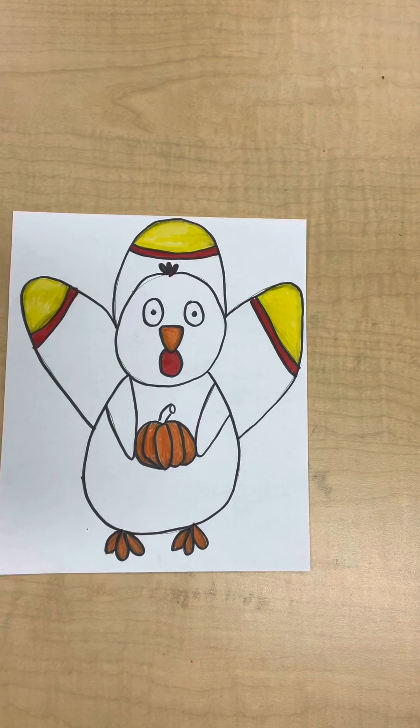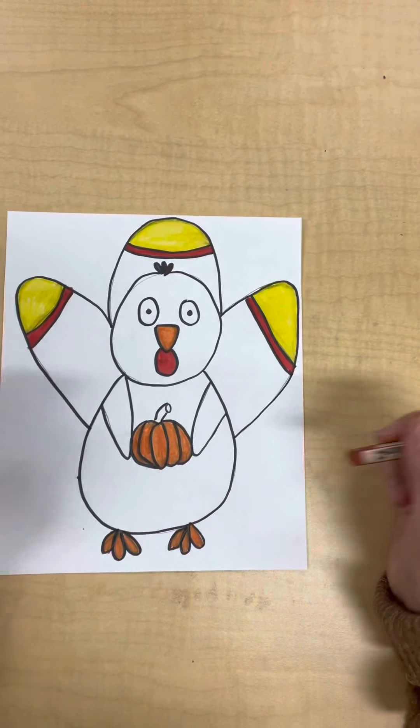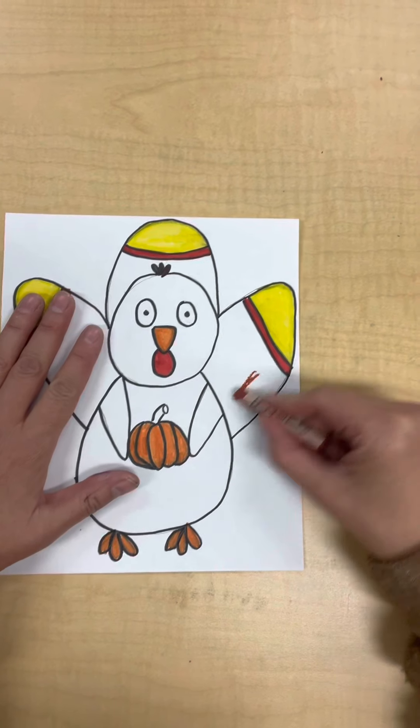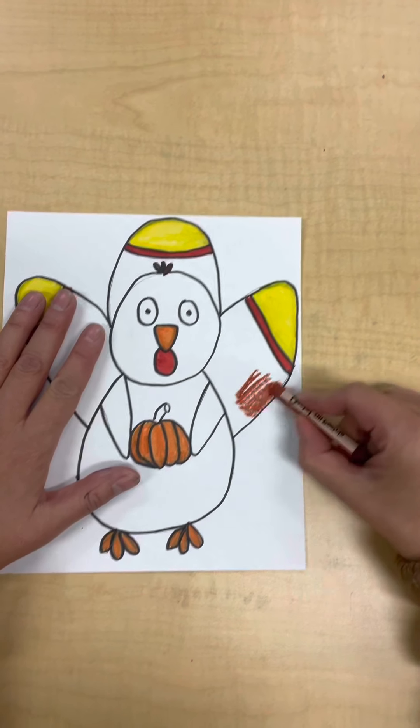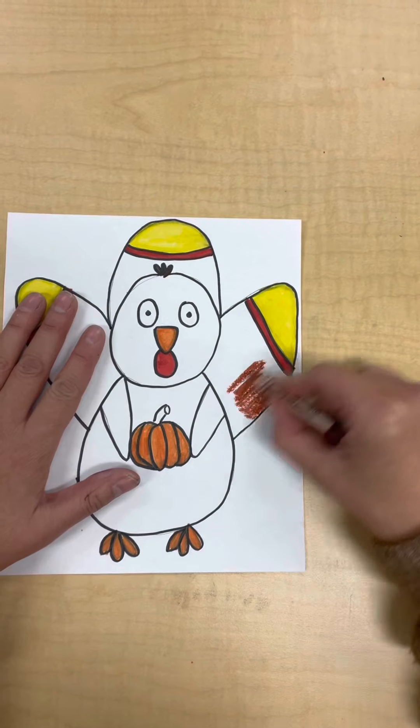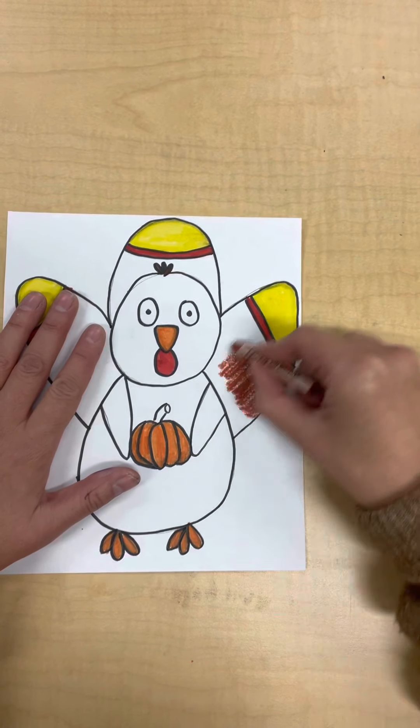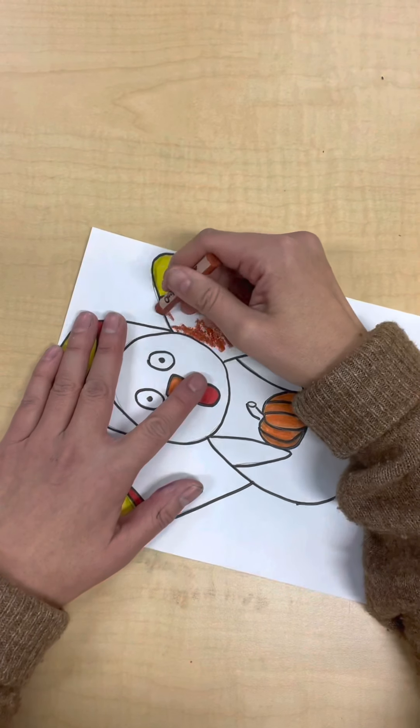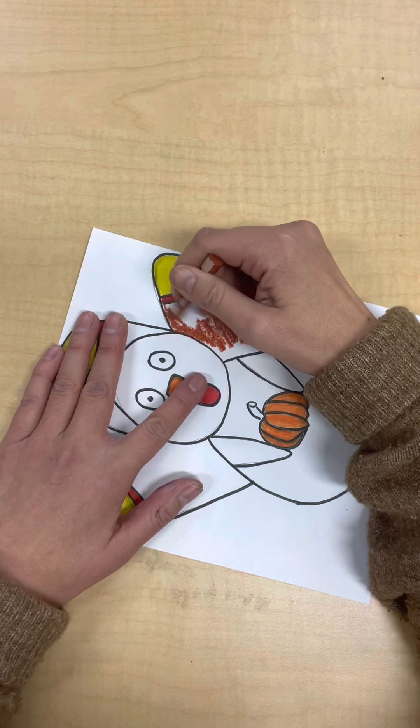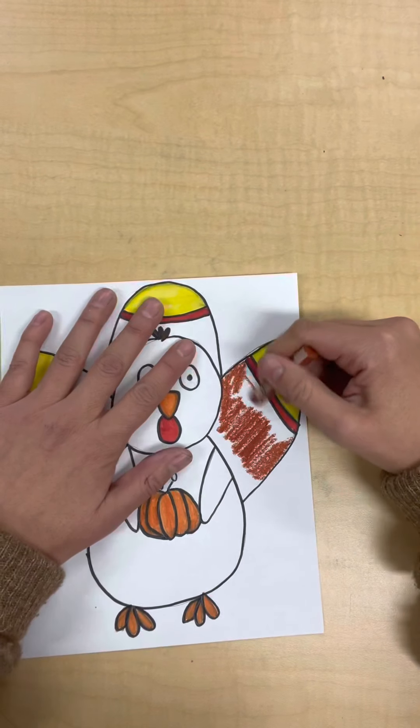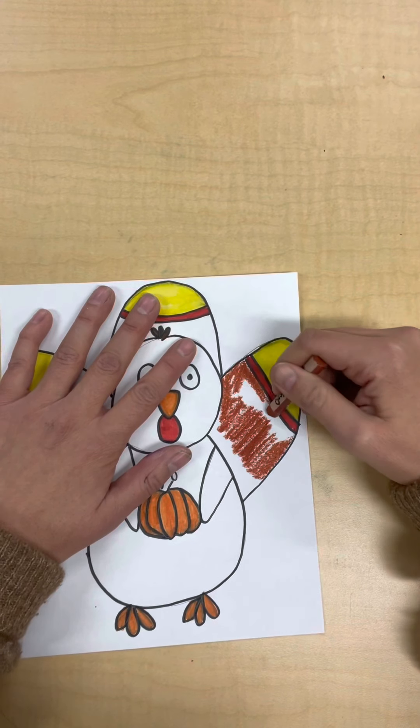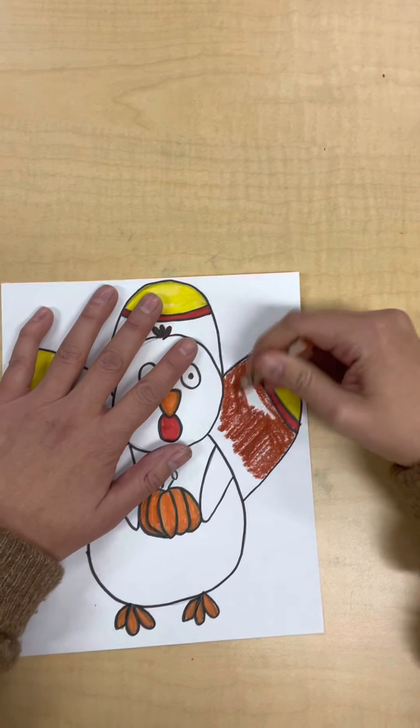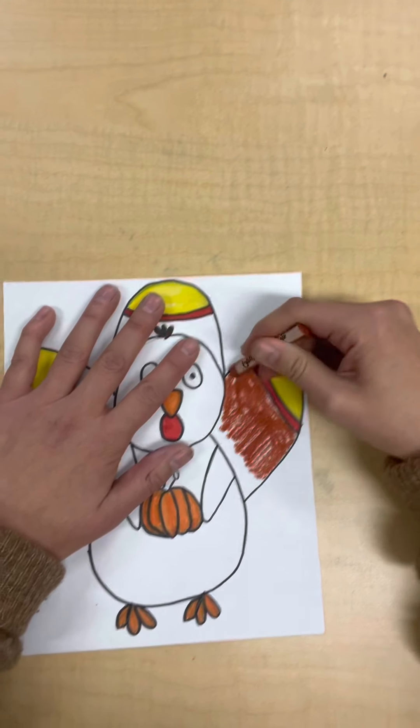All right, so now what I'm going to do is I'm going to take my brown pastel. And because turkeys are feathery, I'm going to come and do this because it will give these feathers kind of a more ruffled look. You could just use your brown crayon or brown marker as well. I just want to show you how you can mix your coloring materials.